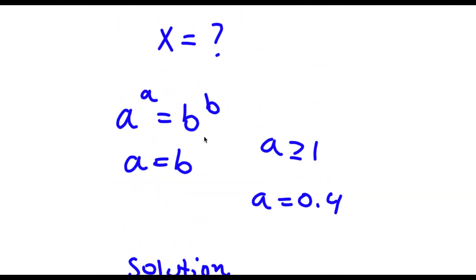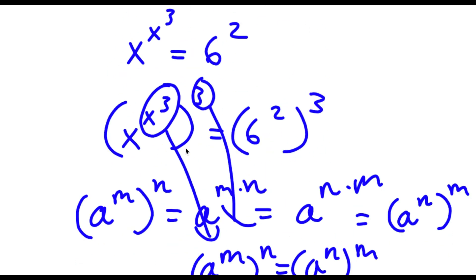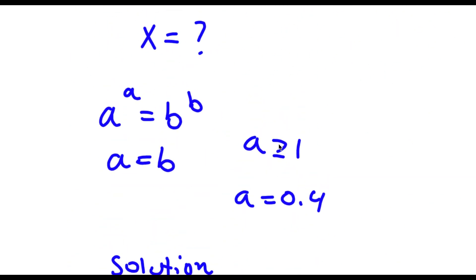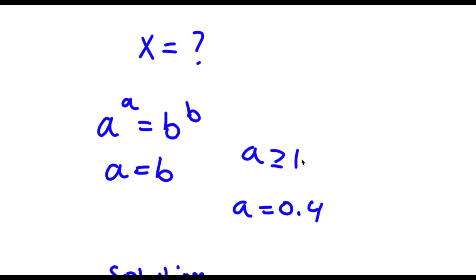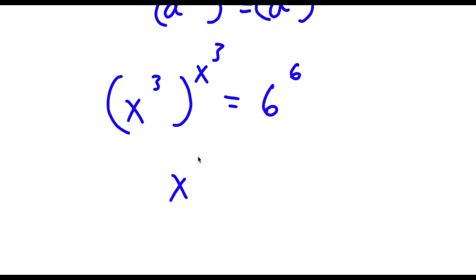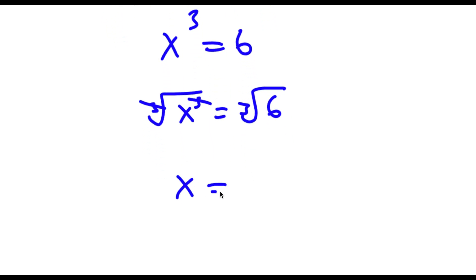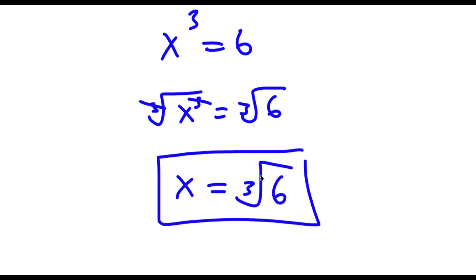Now remember, if I have something in the form a to the power of a is equal to b to the power of b, this means a is equal to b. This is only if a is greater than or equal to 1, and in this case a is 6, which is greater than or equal to 1, so this property applies. So I have x to the power of 3 is equal to 6. Now to solve this I'm going to take the cube root on both sides, so these cancel out and I'm left with x is equal to the cube root of 6. So this is my answer.